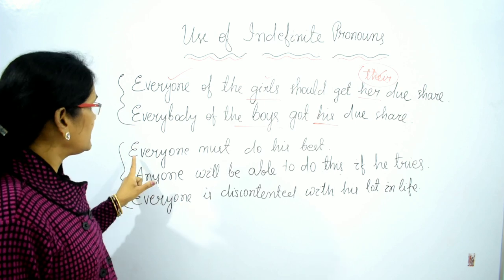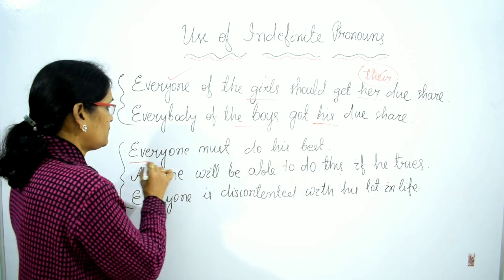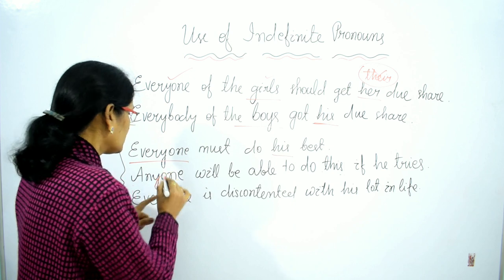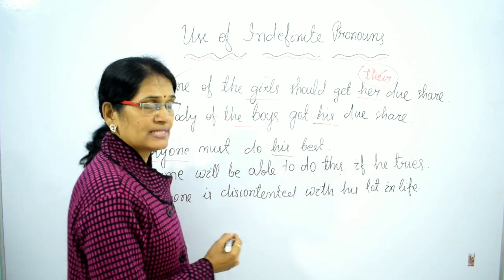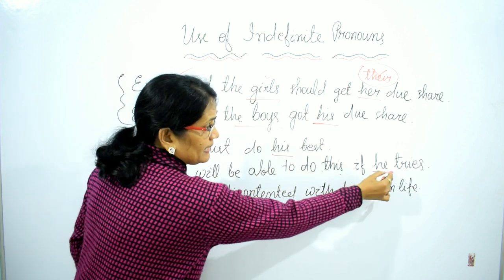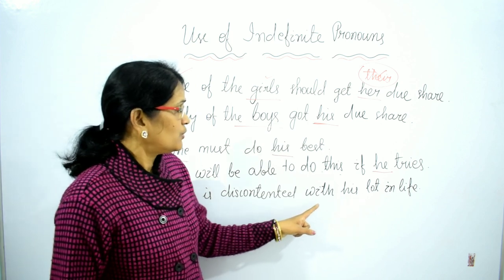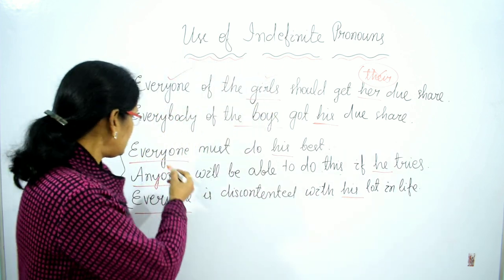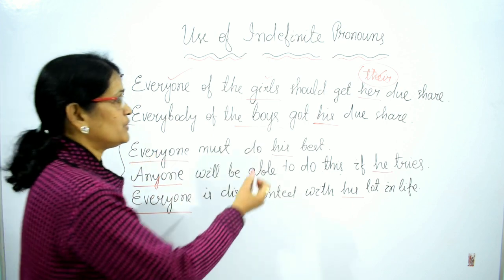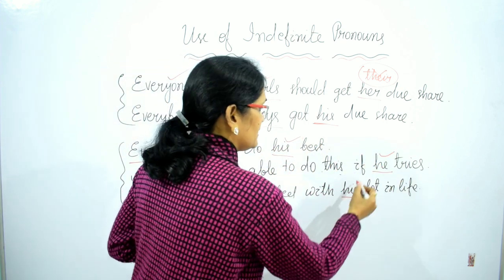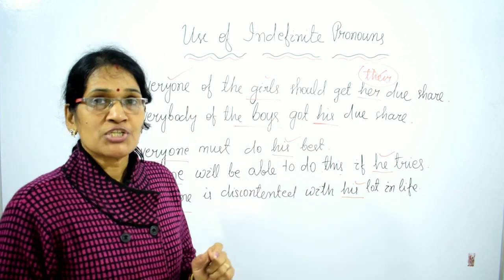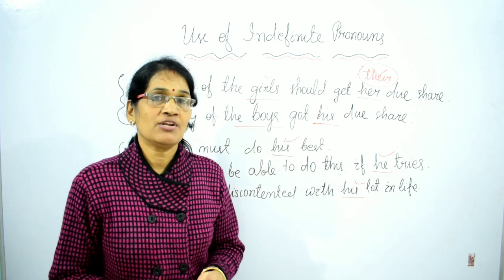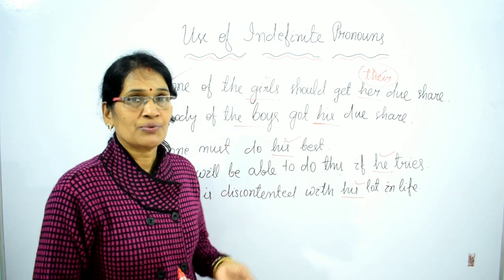In the second group: 'Everyone must do his best.' — Everyone, his. 'Anyone will be able to do this if he tries.' — Anyone, he. 'Everyone is discontented with his lot in life.' — Everyone, his. For these indefinite pronouns, we use masculine gender forms — his, he, his — because there is no indication of any gender. Where there is no indication of any gender, we should follow masculine gender.